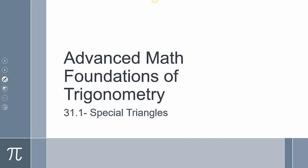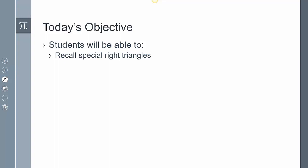Today is 31-1, and we're going to be looking at special triangles. We're going to recall these special right triangles, which is the 30-60-90 and the 45-90 triangle.